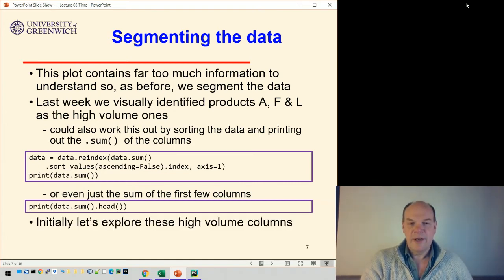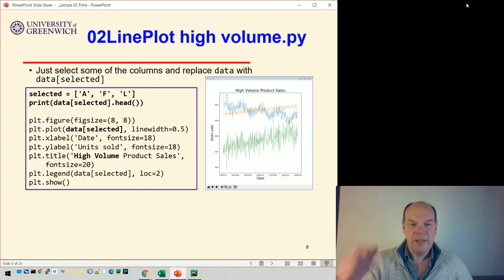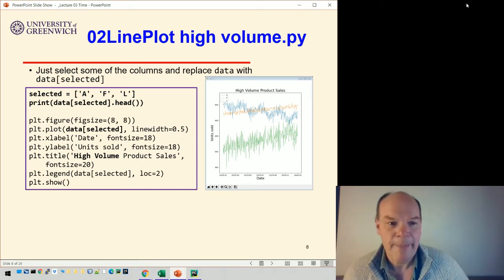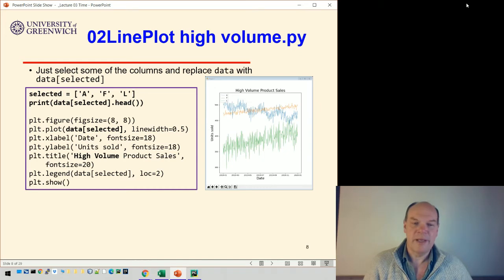So let's first look at these very high-volume columns. So we just select some of the columns with our list of selected columns, just like we did last week. And then we can print the head of those columns if we want to check. And then all we need to do to change the plotting code is just change the data to data bracket selected, and that will then pick out those three columns.